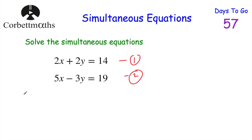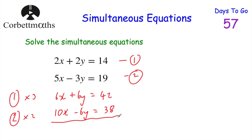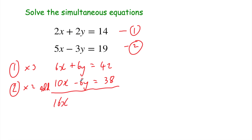So I'm going to get 6y and minus 6y. Multiplying equation 1 by 3: 2x × 3 = 6x, 2y × 3 = 6y, and 14 × 3 = 42. Now doubling equation 2 gives us 10x − 6y = 38. Since we've got 6y and minus 6y, adding these equations cancels the y's. 6x + 10x = 16x; 6y + (−6y) = 0; and 42 + 38 = 80. So 16x = 80.